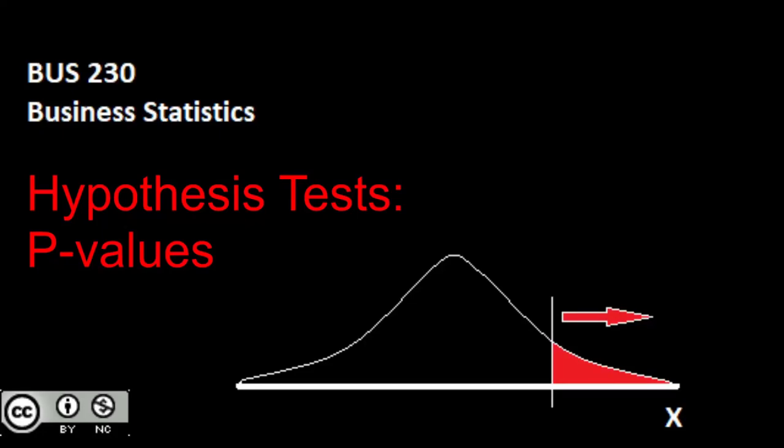Another aspect that is often used frequently in hypothesis testing is the presence of p-values. So here let's talk about what exactly p-values are, when they're used, how they can be used, what they represent, and then work them into our hypothesis testing procedure.